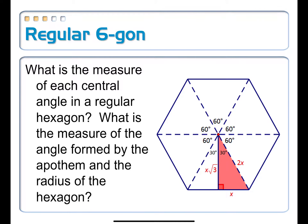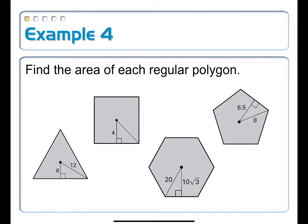Next, we have a collection of four regular polygons and we want to find their areas. Try to use our new formula: area equals the apothem length times the perimeter. If you get stuck, or want to check your answers, check out the next video where I'll work through each one step by step.